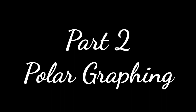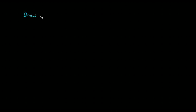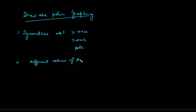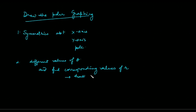Hello, everyone. Today, I'm going to explain how to draw the polar graph. In polar graphing, first of all, we check the symmetries — symmetries about the x-axis, about the y-axis, and the pole. Then we consider different values of theta and find corresponding values of r. Then we draw the graph. So these are the steps which we follow to draw the polar graph.